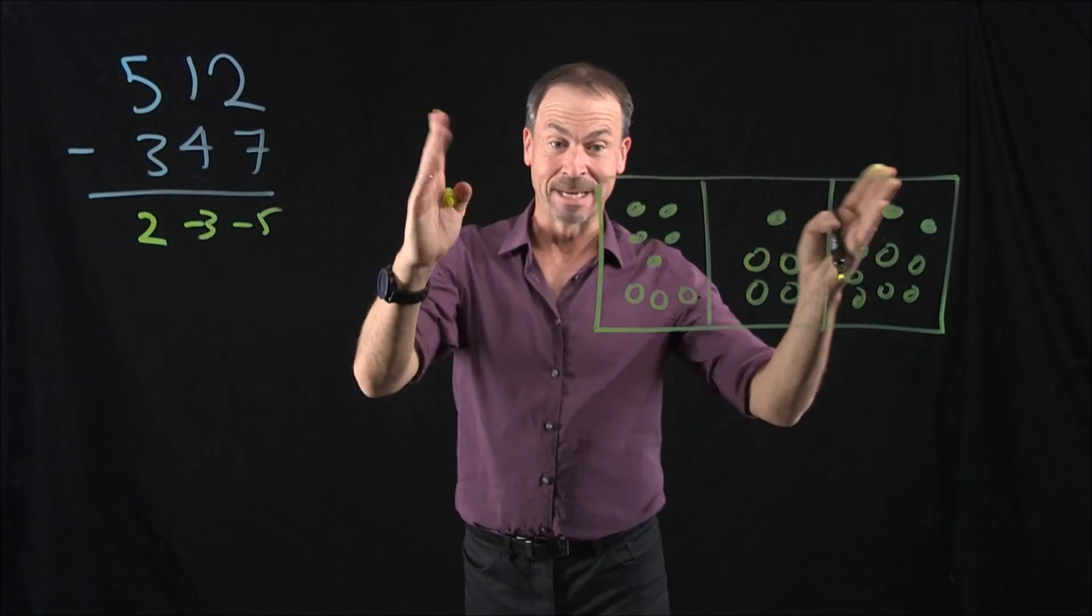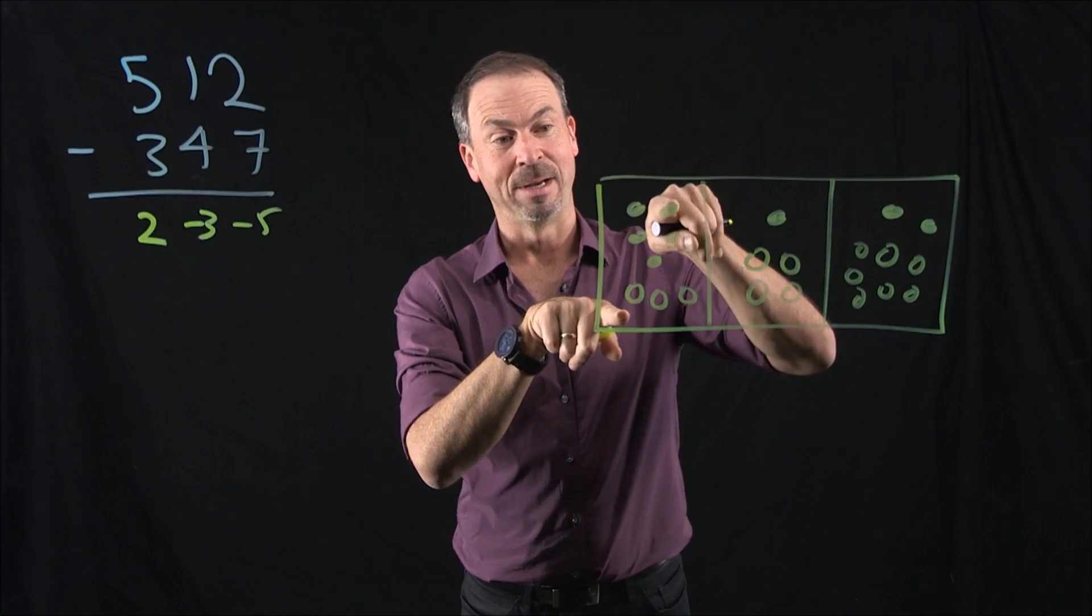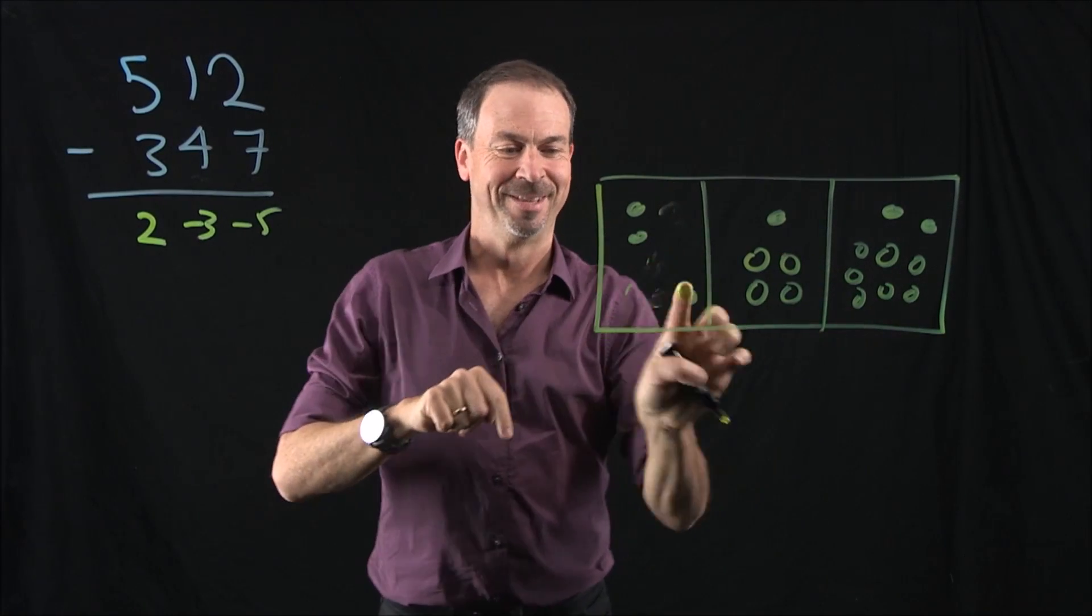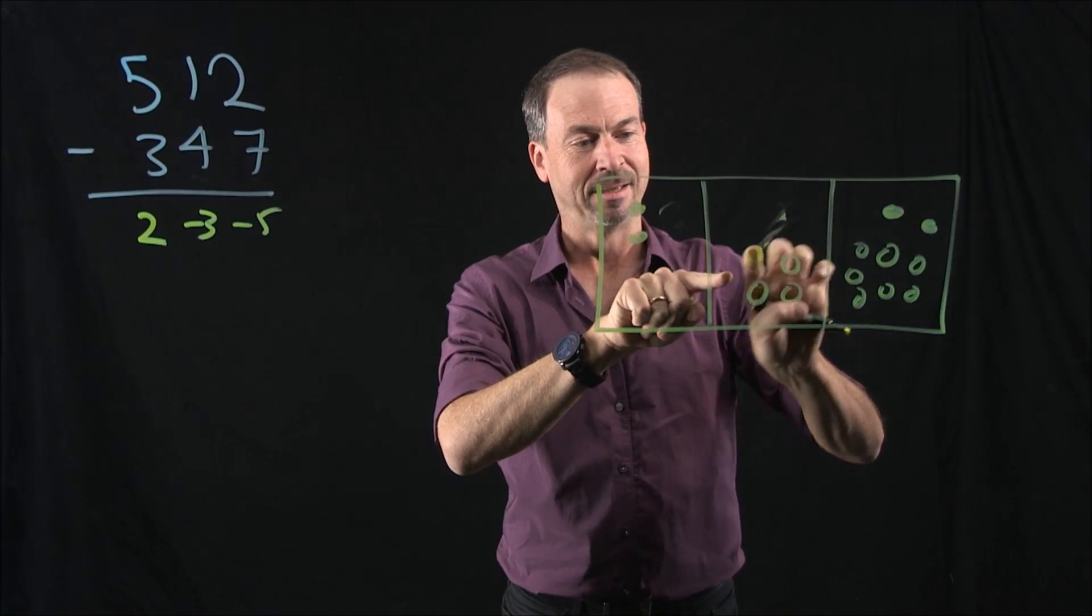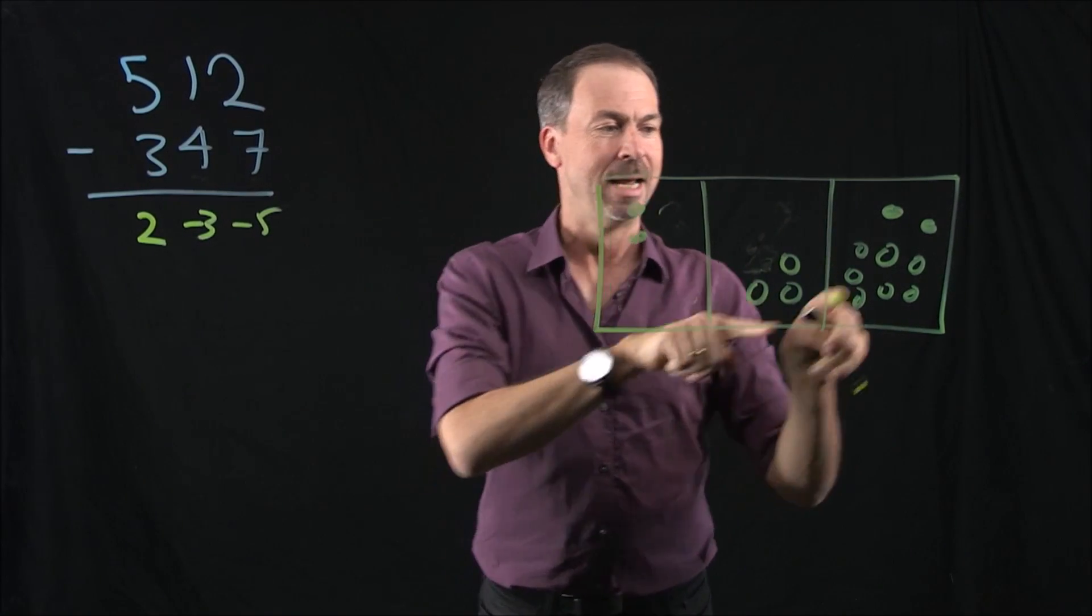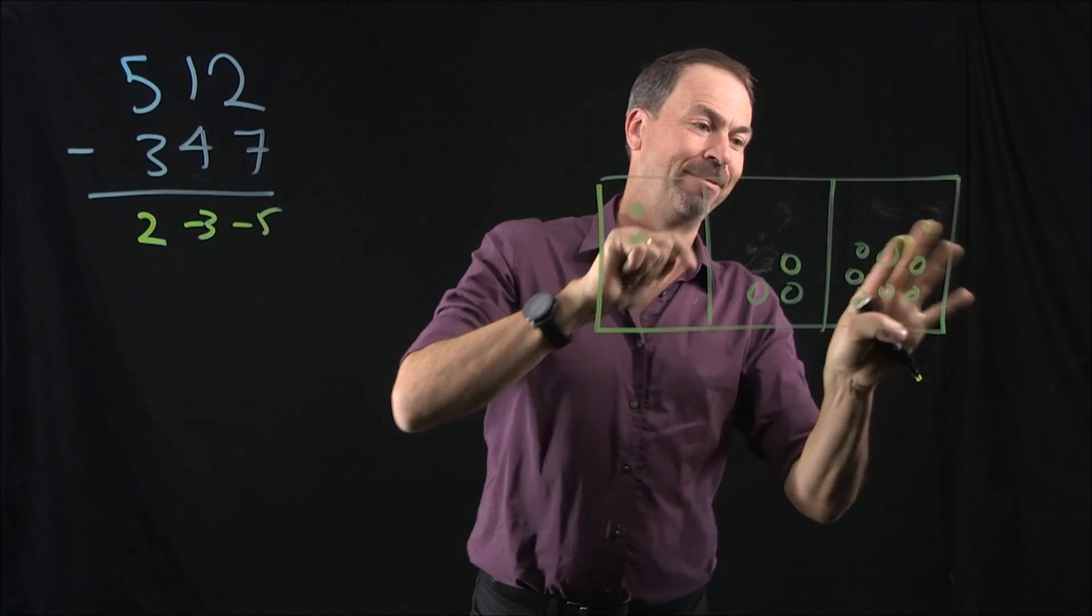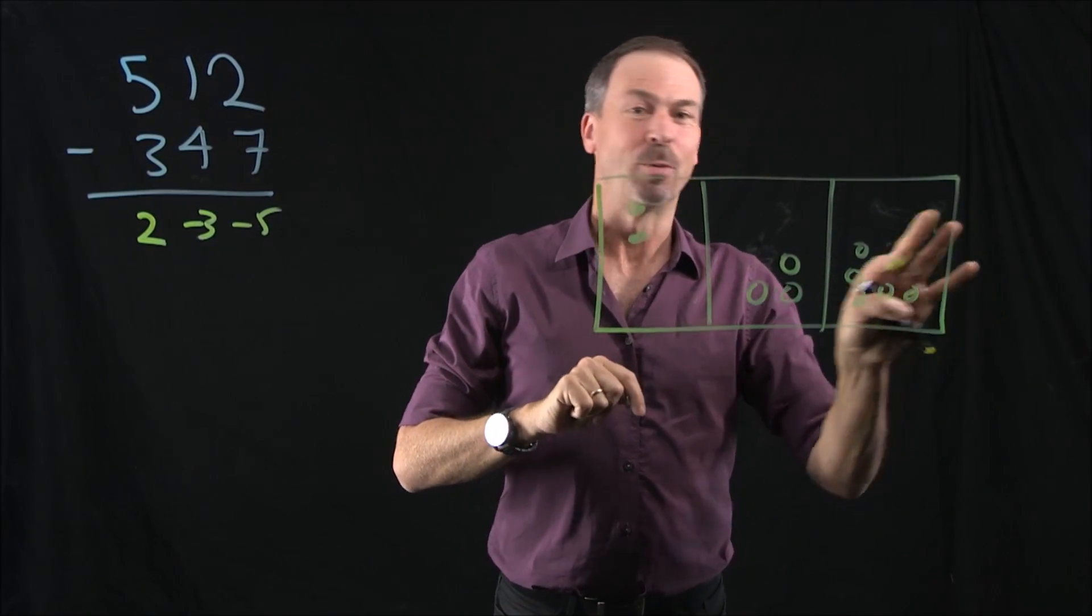Are there any annihilations? You bet. 3 anti-dots, 3 dots. Poof, poof, poof. Annihilate. 1 dot, 1 anti-dot. Poof. Annihilate. A little smudgy here, but I think we're okay. 2 and 2. Poof, poof.